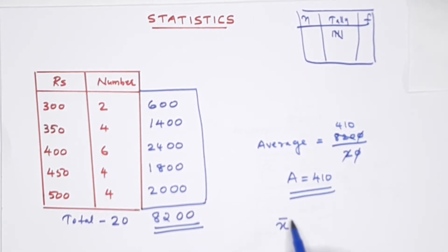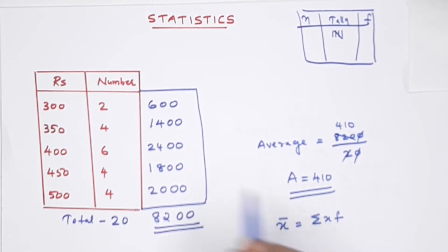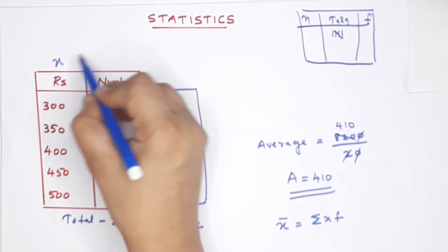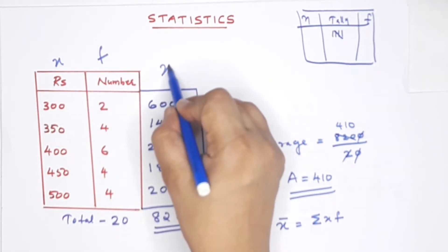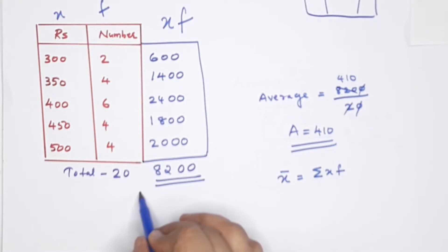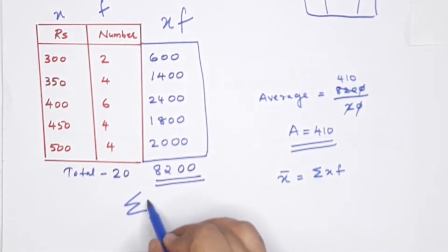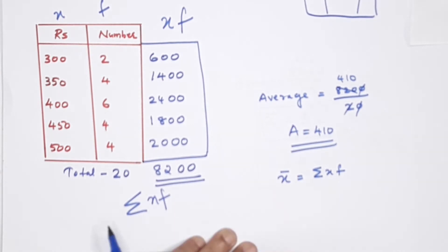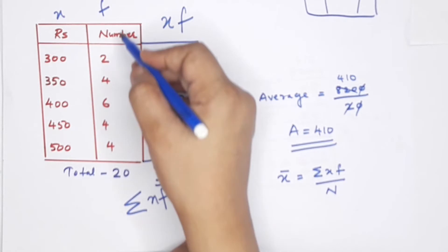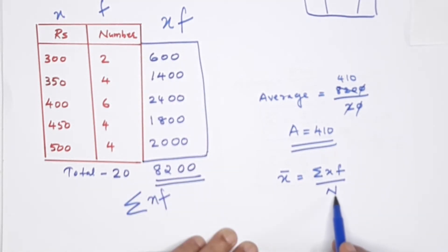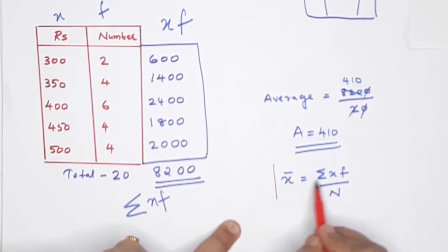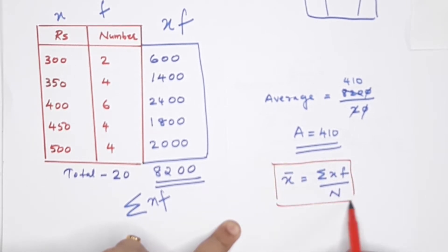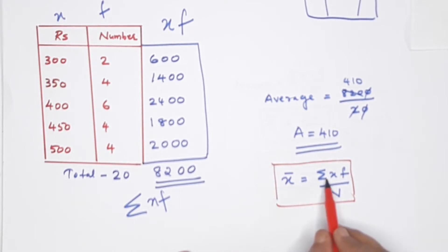The average - this is the sum of xf. The formula is x-bar equals sigma xf divided by n, where n is the total number. We have studied this formula. x-bar equals sigma xf by n. We have to make this formula easy to use.